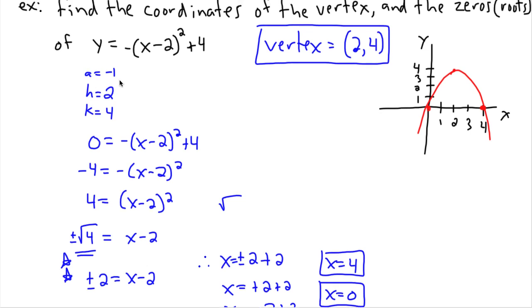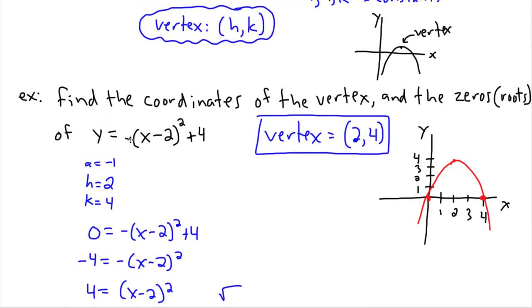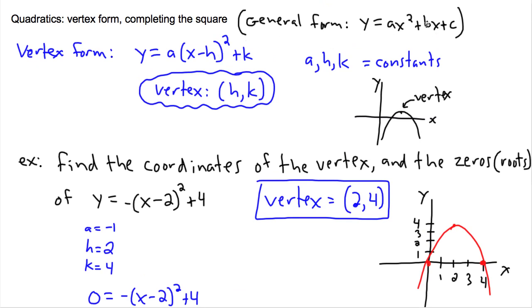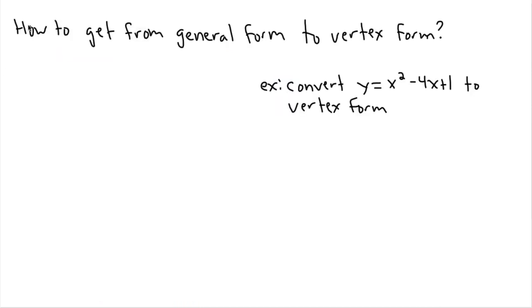Now what do we do though if we're not given a vertex form? In other words, if it's not in this nice form here but instead if it's in general form, which is like ax squared plus bx plus c. So that's the question right here. How to get from general form to vertex form?